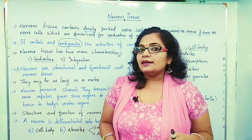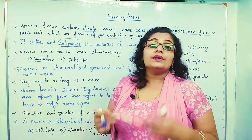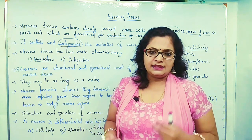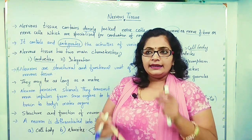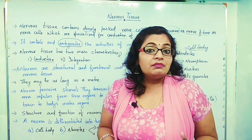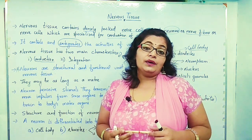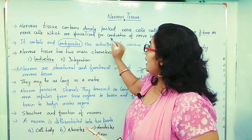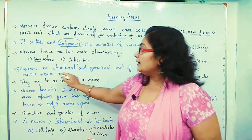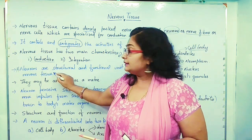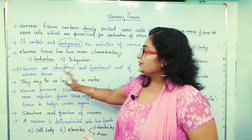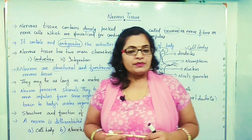Neurons are the composition of nervous tissue — nervous tissue is made from neurons. So what do we mean by neurons? Neurons are cells that are the structural and functional unit of nervous tissue.